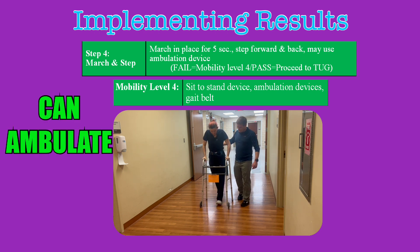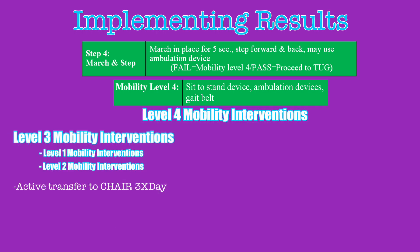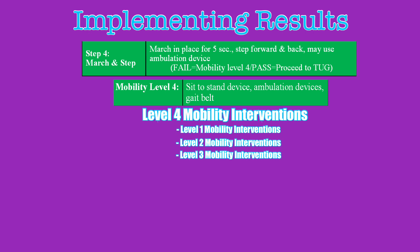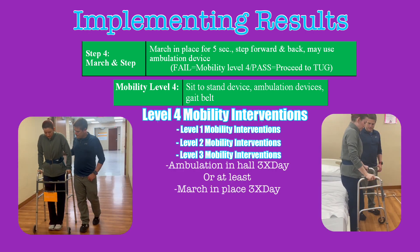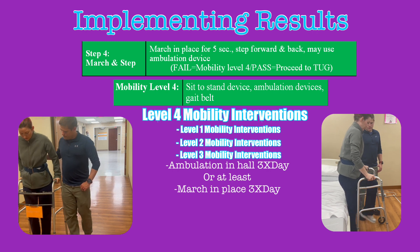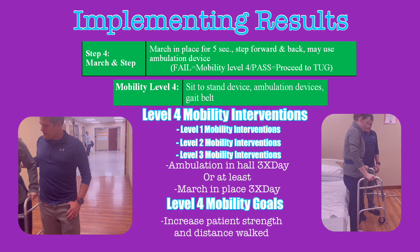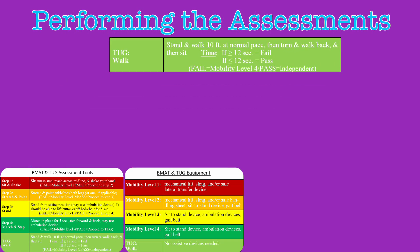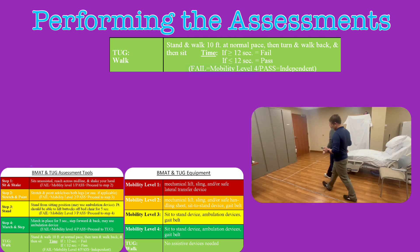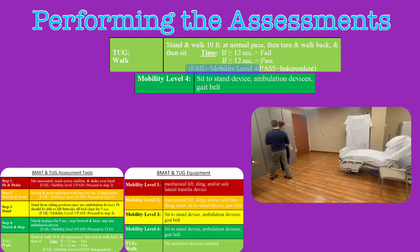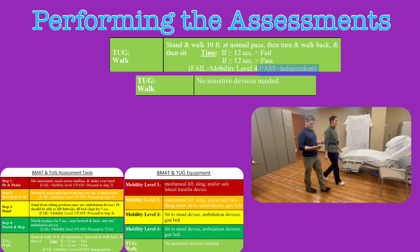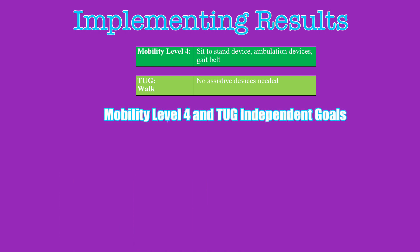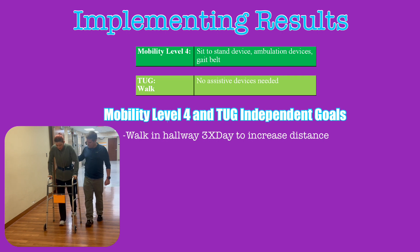Level four patients can ambulate but are not independent. Level four mobility interventions include all of those previously mentioned in levels one through three, and also include ambulation in the halls or at least marching in place with a gait belt and support from a provider three times per day, with the goal of increasing the patient's strength and distance. If the patient passes level four and you did not already perform a TUG test, proceed to the TUG test. If they fail the TUG test, they are still a mobility level four patient. If they pass, they are considered independent. With both mobility level four and TUG-independent patients, the goal is to walk in the hallway at least three times a day with a goal of increased distance.